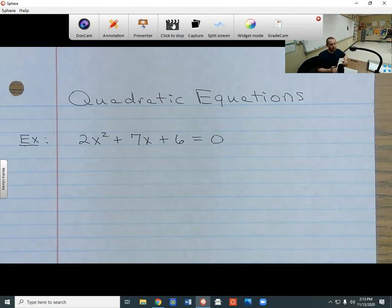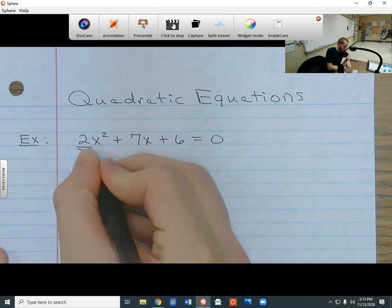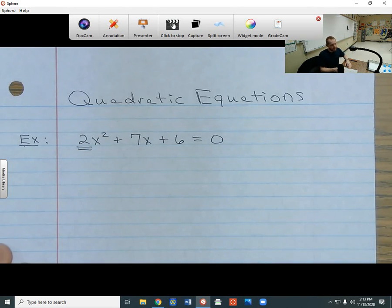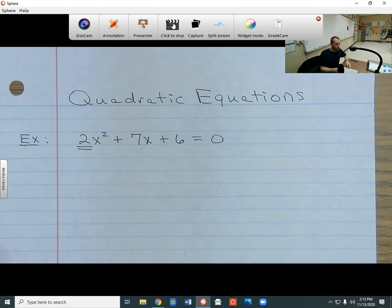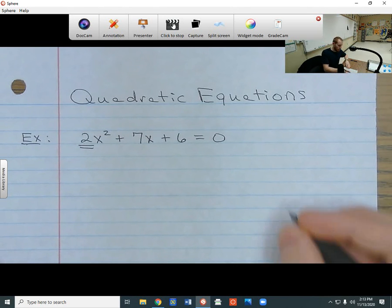Alright, so continuing on with quadratic equations, sometimes you reach something that you can't factor the normal way. And this is because you have a leading coefficient out in front that is not 1. This is a 2. So you actually have to end up multiplying something by 2 at the end. Now when you have something like this, you have to do what's called the rainbow method.